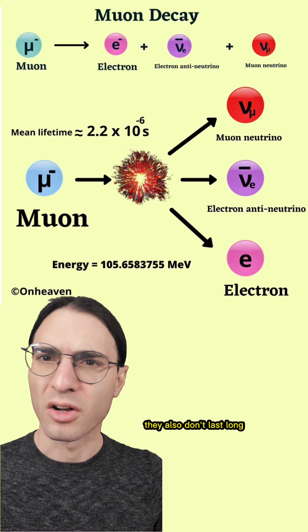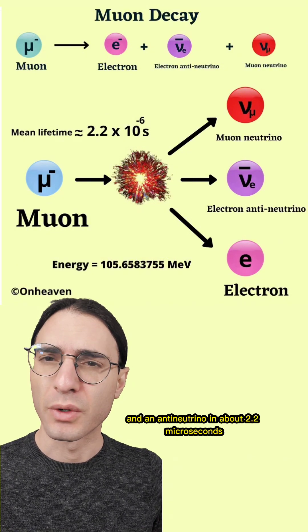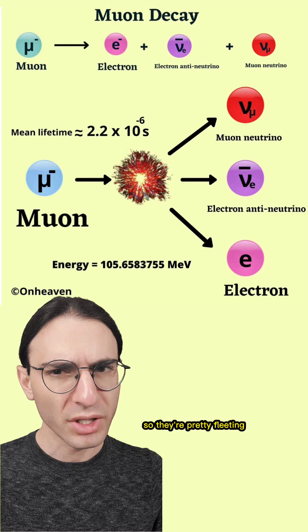They also don't last long. They decay into an electron, a neutrino, and an antineutrino in about 2.2 microseconds, so they're pretty fleeting.